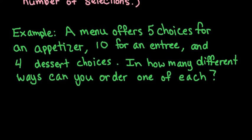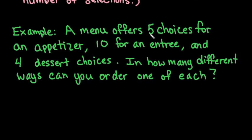So what I have here is an example. A menu offers 5 choices for an appetizer, 10 choices for an entree, and 4 dessert choices. In how many different ways can you order one of each? So how many times can I go back to this restaurant and get a different combination or a different way of ordering these items?